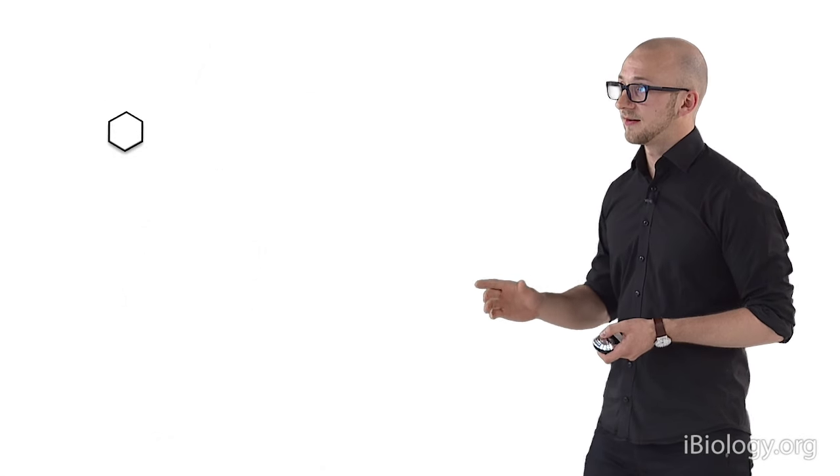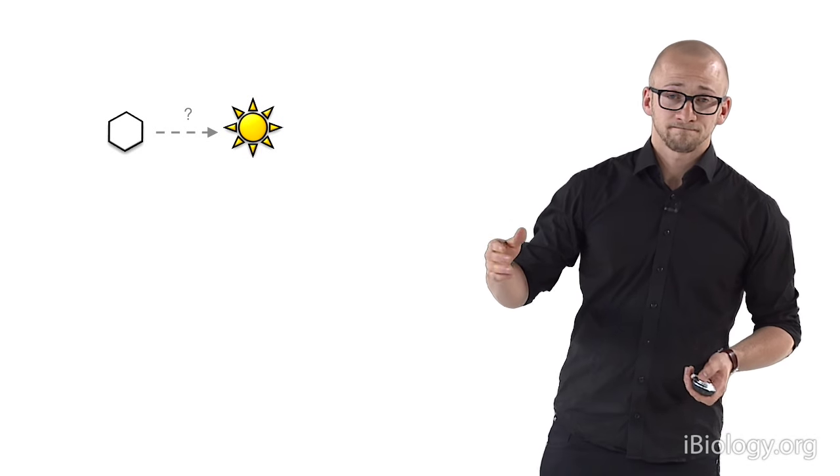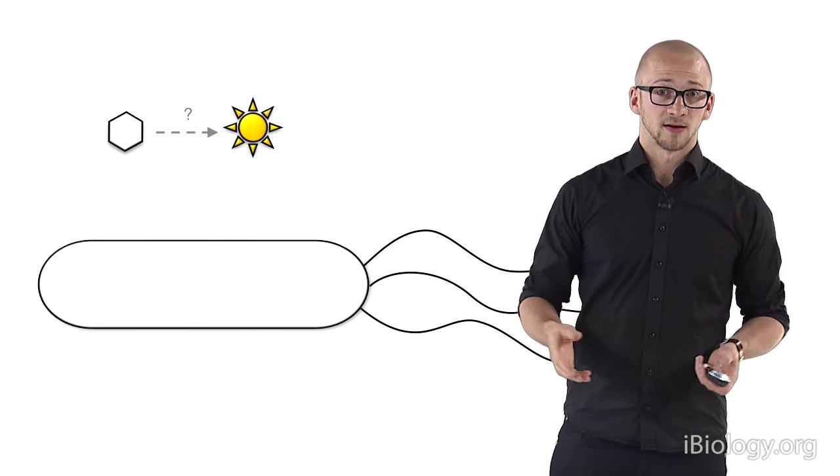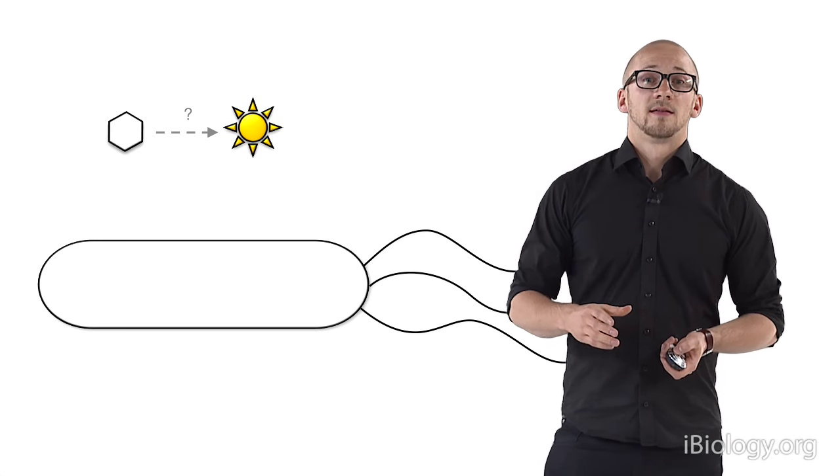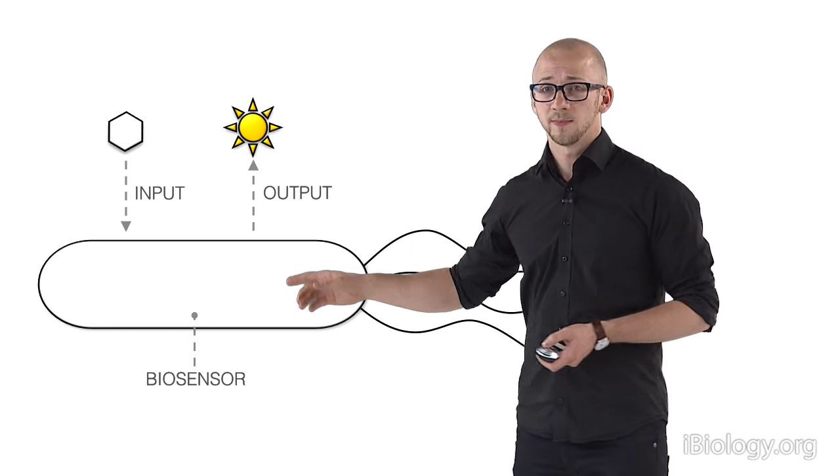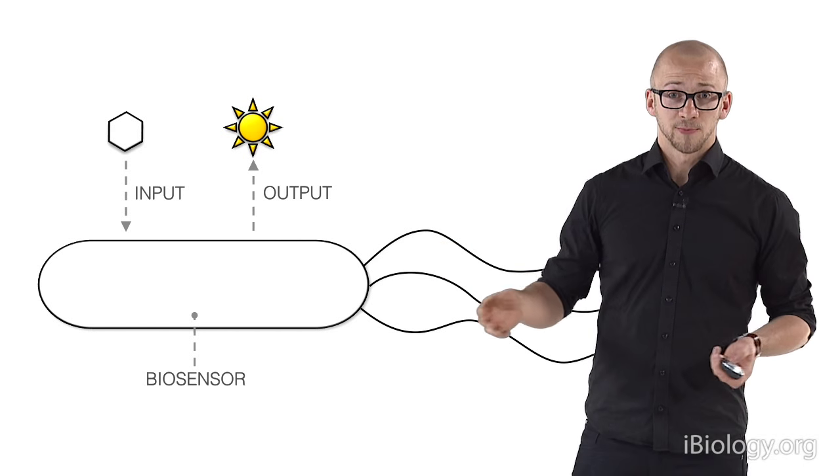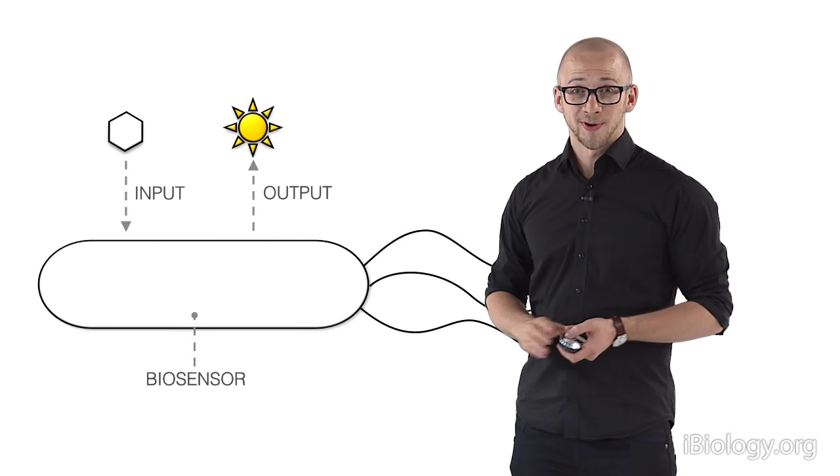Now, what analytics is all about is taking a weak signal and converting it into something that we can see or detect. Microbes have evolved to sense their environment and react to it. So if we could use a microbe to take the input signal and turn it into something visible like light, that would be really handy. We would call that a biosensor.